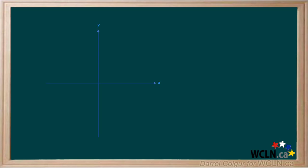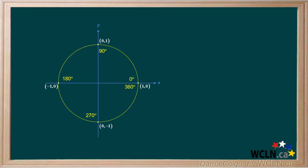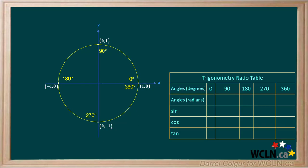We'll start by drawing the y and x axis, then we'll add a circle. Then we'll add marks at 0 degrees, 90 degrees, 180 degrees, 270 degrees, and 360 degrees. 360 degrees has the same mark as 0 degrees. Here are the coordinates for these four points when the radius of the circle is 1. We'll construct a table to record values for these four angles.